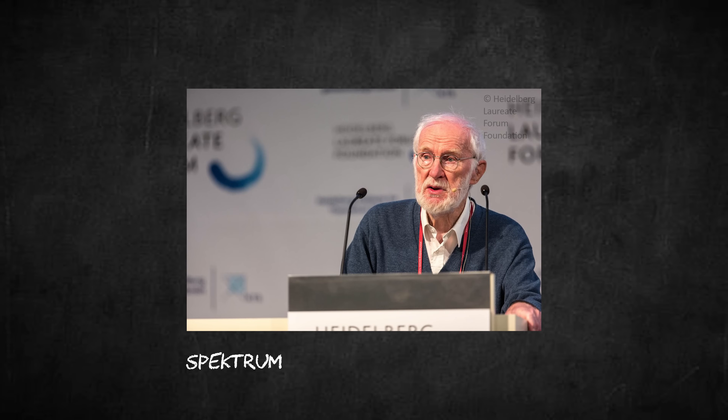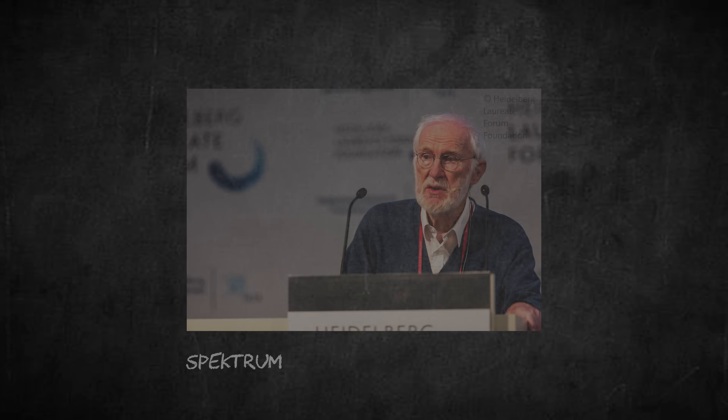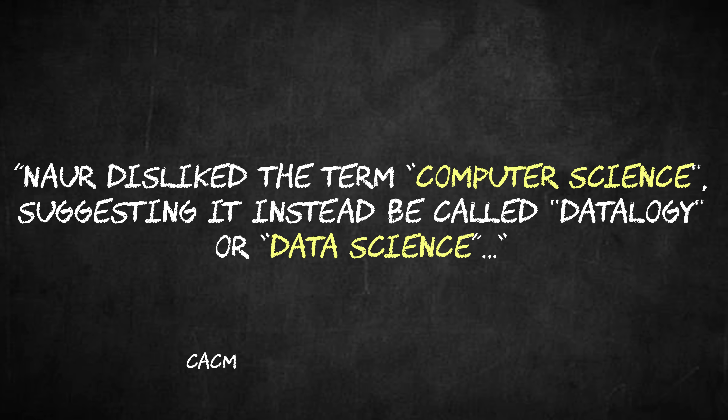To understand what data science is now, I think it's important to very briefly understand where it started. Data science has been around for a lot longer than most of us realize. In 1974, the famous computer scientist Peter Naur proposed data science as an alternative name for computer science.